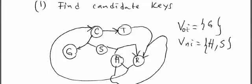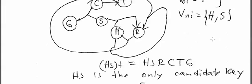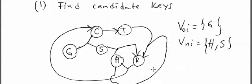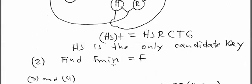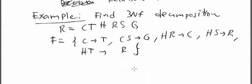By inspecting the graph, we look at only incoming, non-incoming. Non-incoming is H, S. If H, S is a candidate key, that will be the only candidate key, that's the claim that we have. So we found the candidate key, that's the step number one. Step number two, we find the F min.